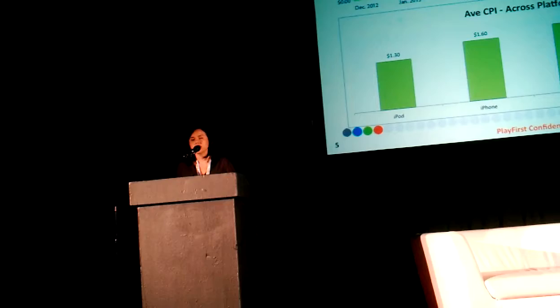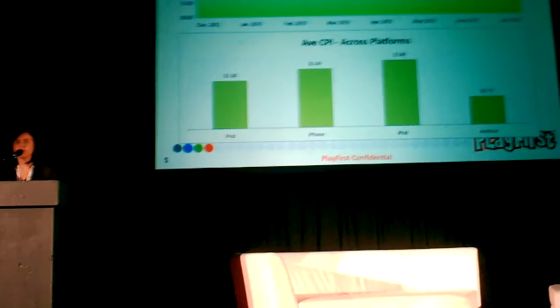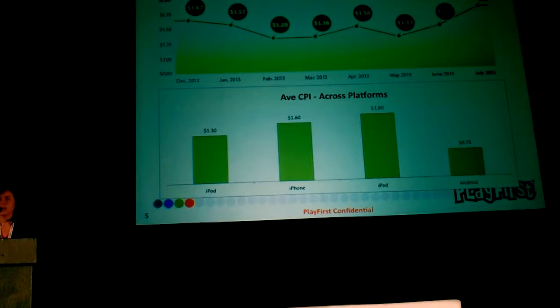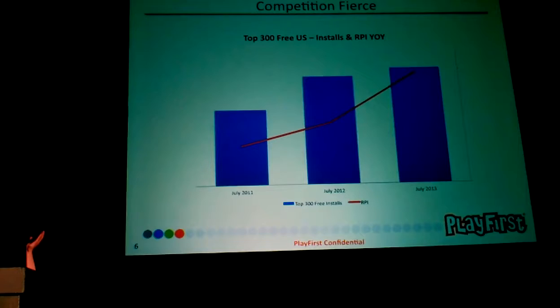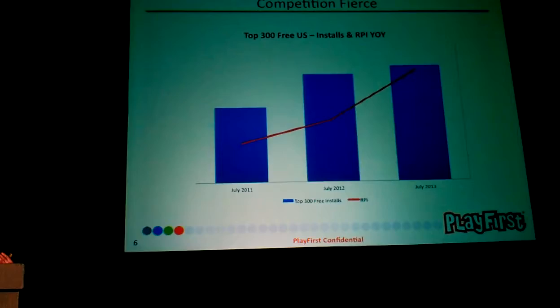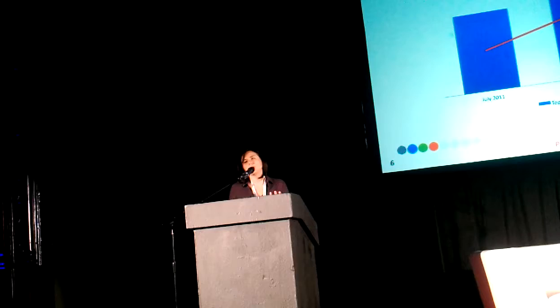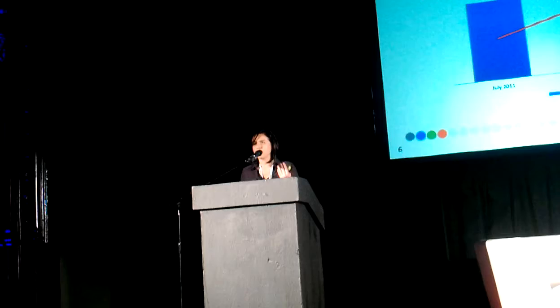Of course, as Android starts to become more of a prominent player, CPI will rise here as well. However, for us, this year was really key to launch all these titles there and we saw very strong growth. On iOS, looking at a three-year, year-over-year comparison, the install base on iOS — specifically in the United States — is becoming more and more saturated. The RPI is increasing, and it's very hard to compete. The products on iOS in the top 300 are very aggressive, and getting into the top 20 or top 50 charts is very expensive and very difficult to do.